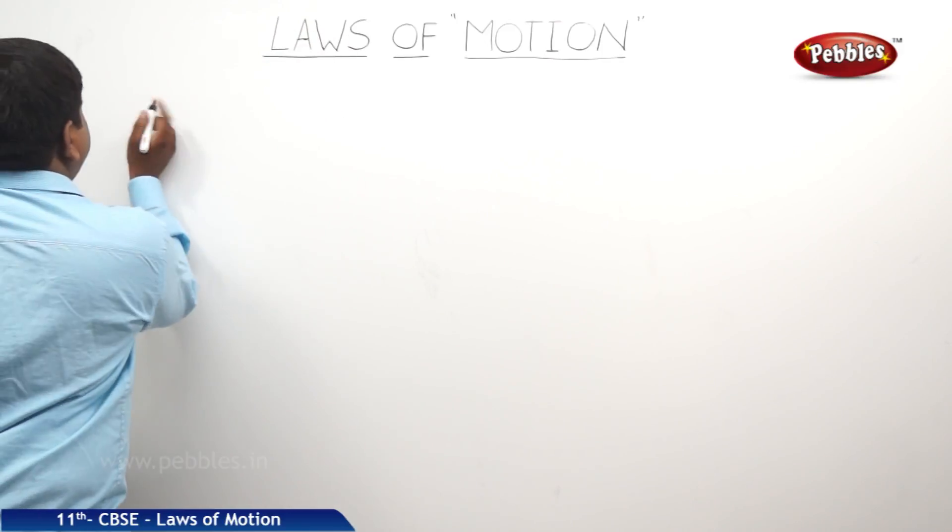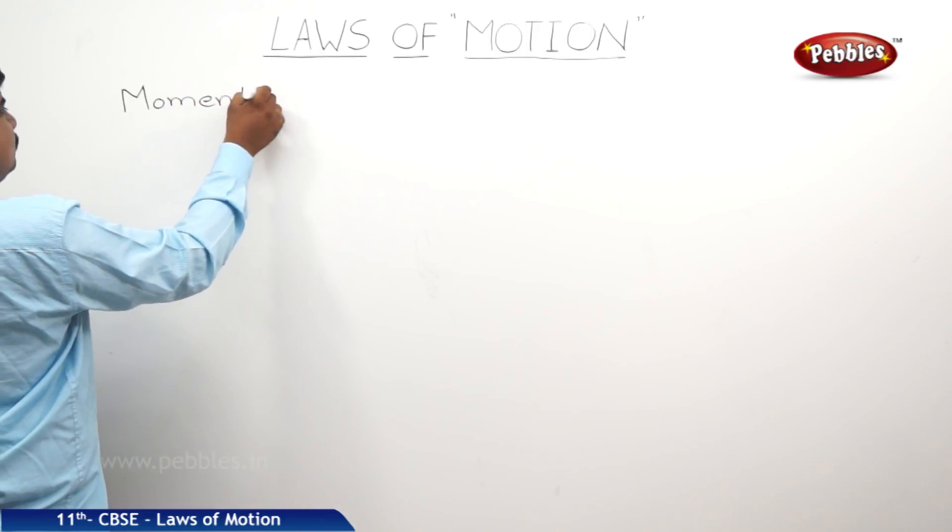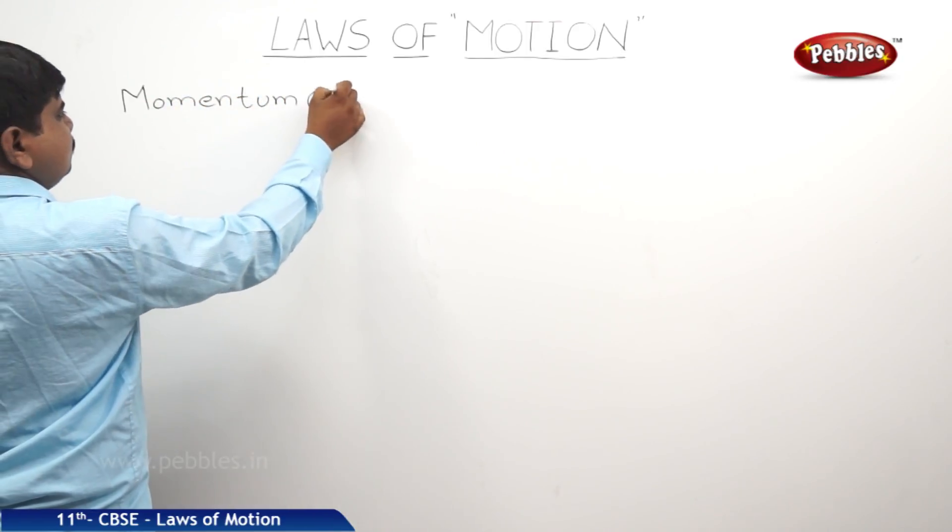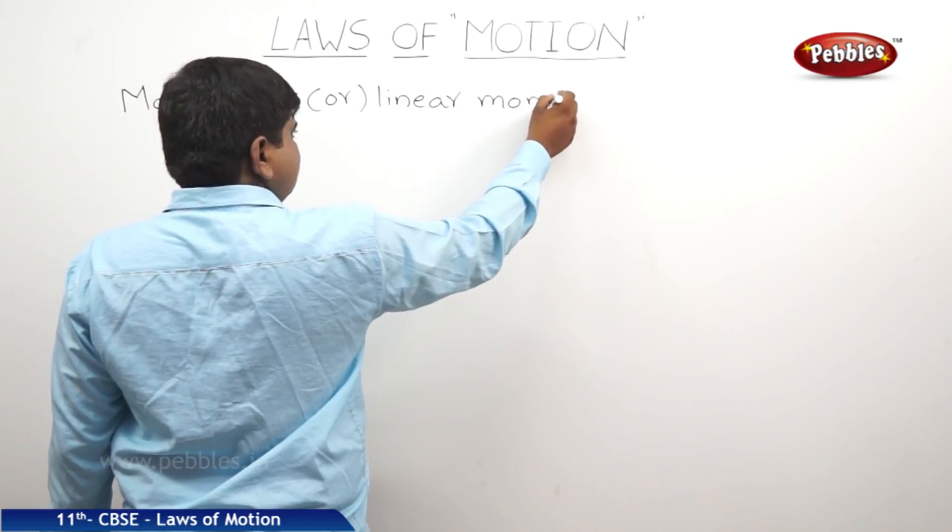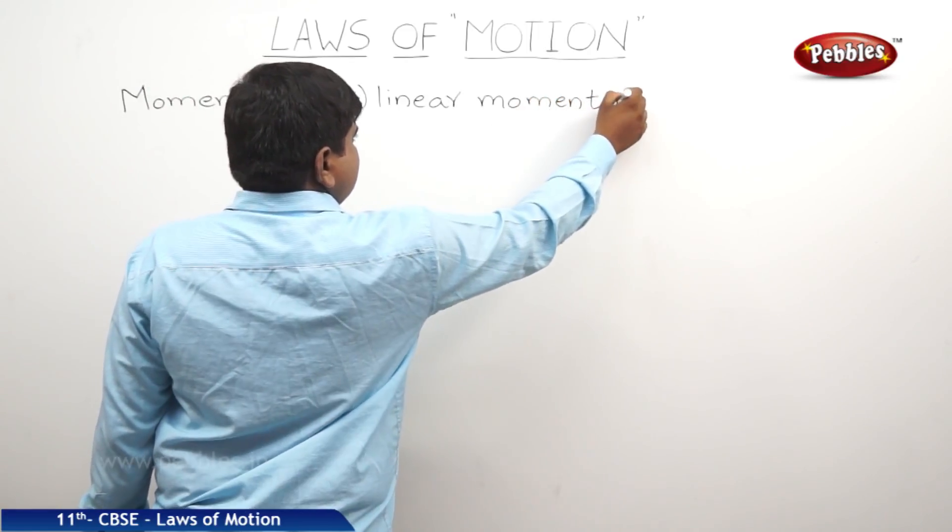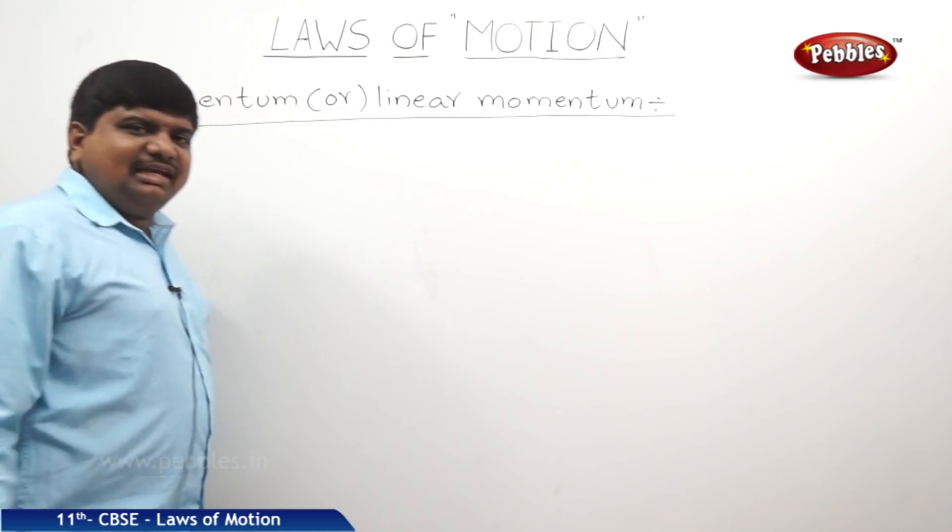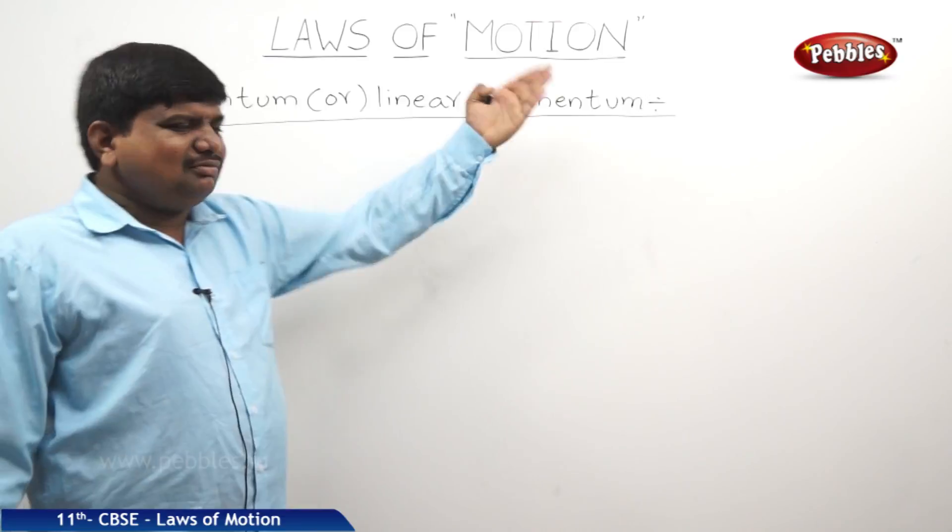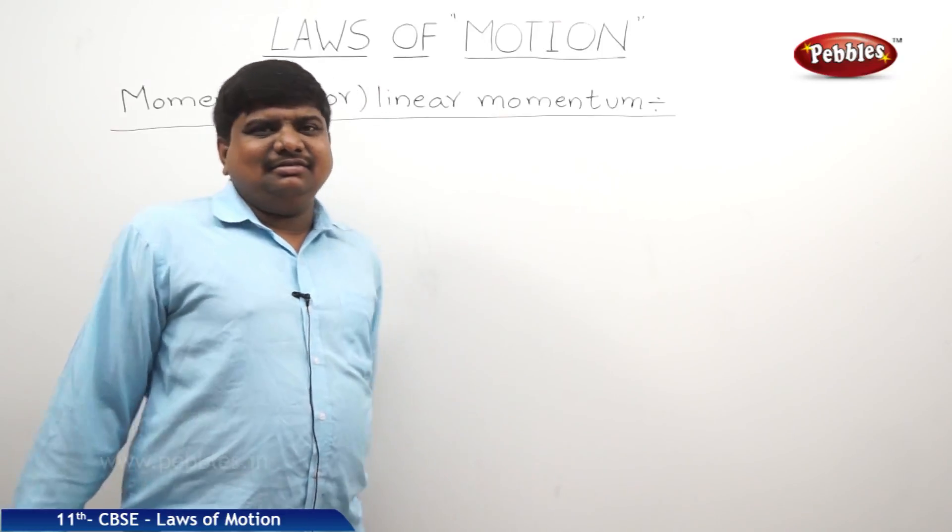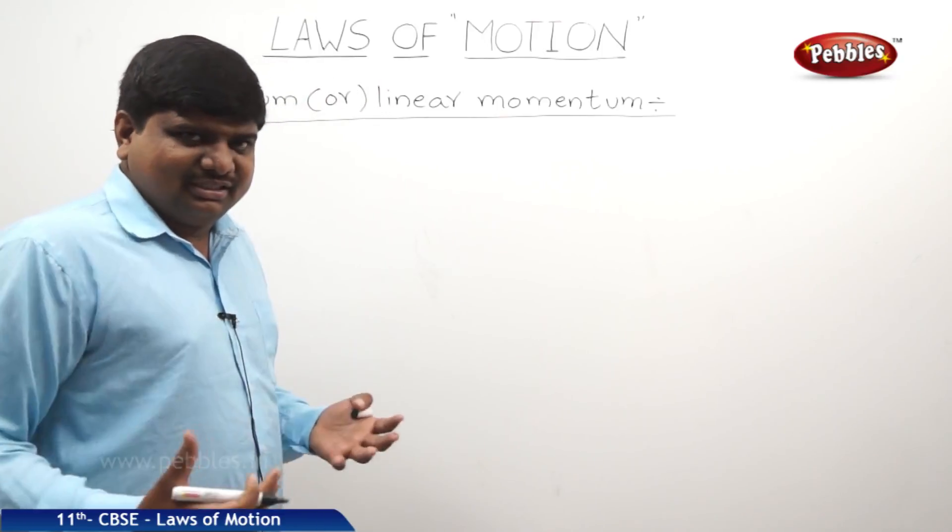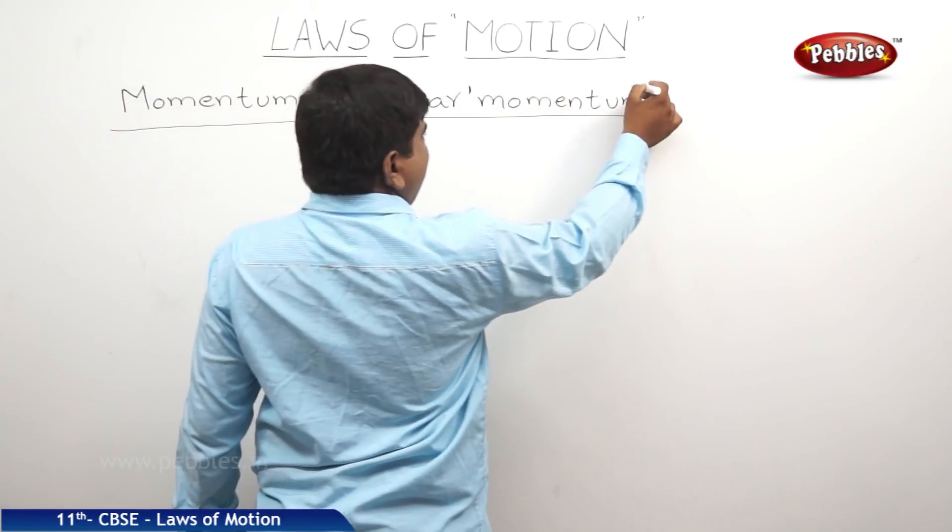The next concept is momentum or linear momentum. Now what is the meaning of momentum? We use this term generally when a person is rigid, not at all moving or not at all active, so we should motivate him. In general words we will say his momentum is very less. So like that, what about the momentum of the objects?